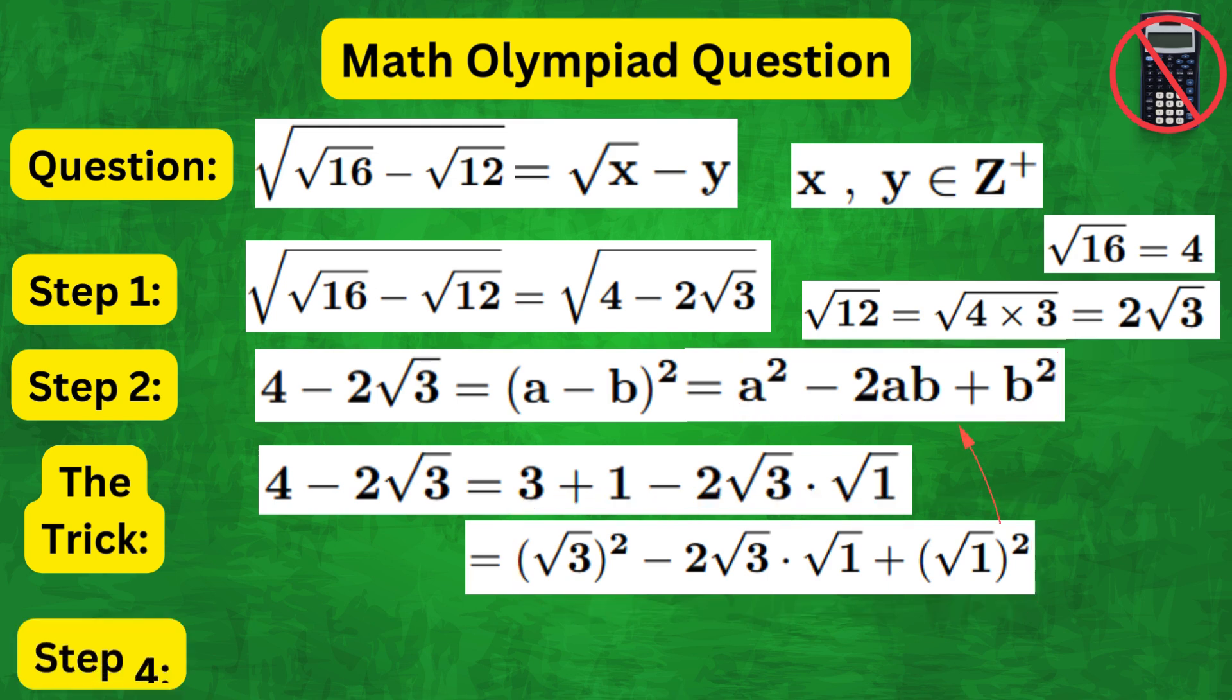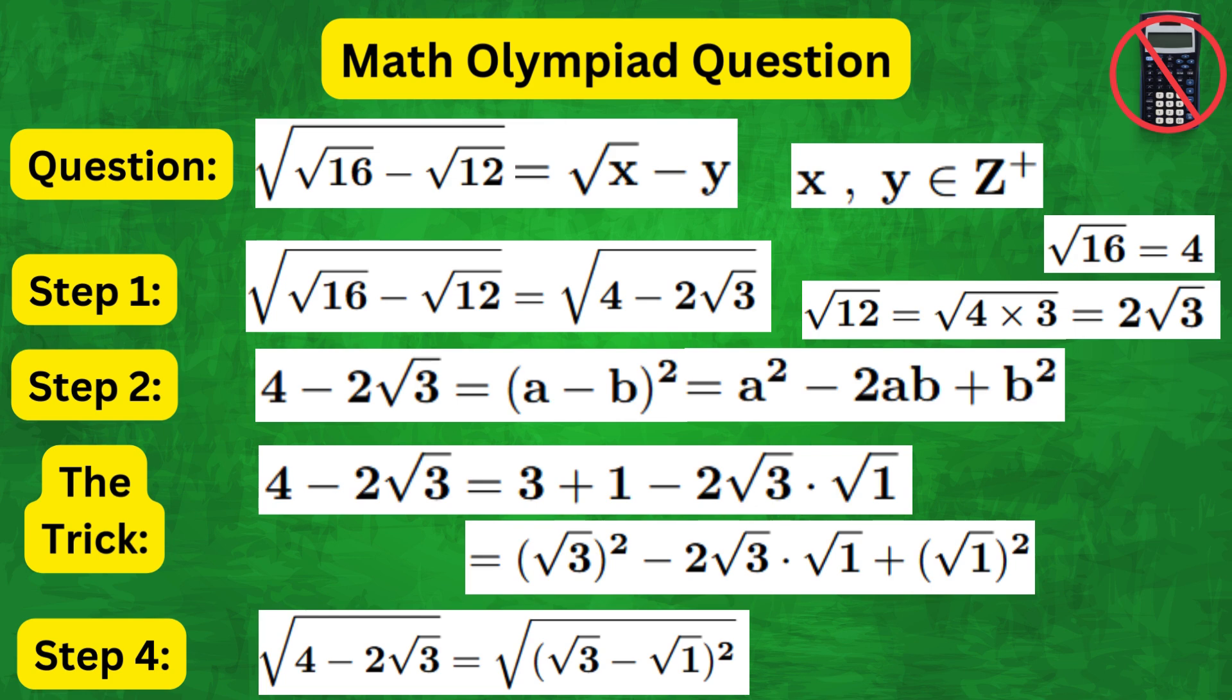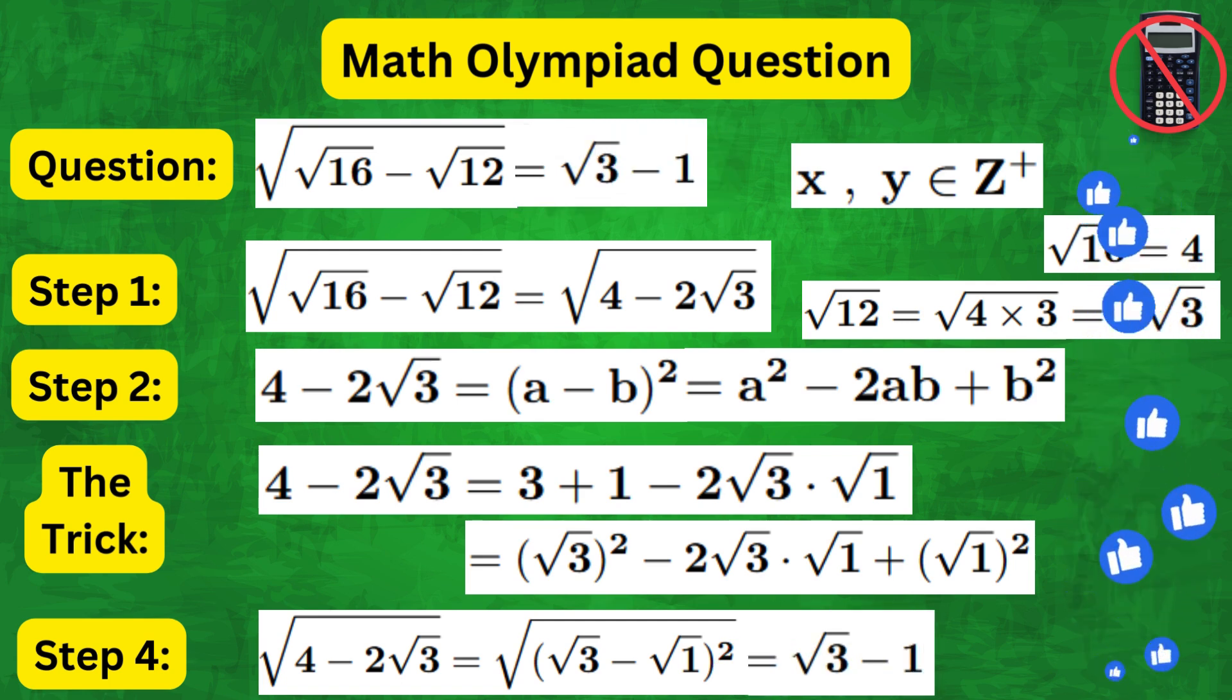Therefore, plugging it in, we get square root of root 3 minus root 1 whole squared. The square and the square root cancel to leave us with root 3 minus 1, which is the required form. Thank you for watching and see you next time.